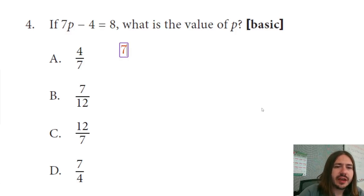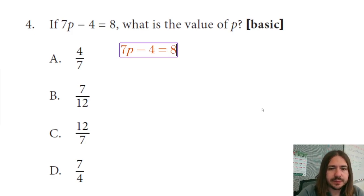So here we're just solving a linear equation: 7p minus 4 equals 8. There's no distributive property to do here, no like terms to combine, so we're just going to move on to our properties of equality.